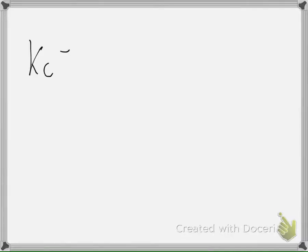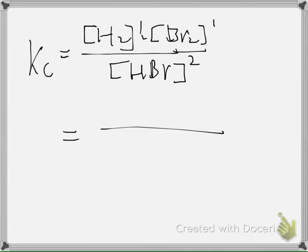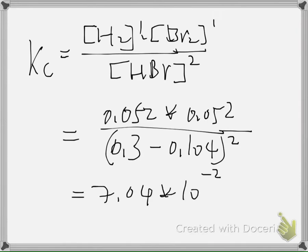Writing Kc: Kc = [H₂]¹ × [Br₂]¹ / [HBr]². Plugging in the values: Kc = (0.052 × 0.052) / (0.3 − 0.104)². This equals 7.04 × 10⁻². The answer is B.